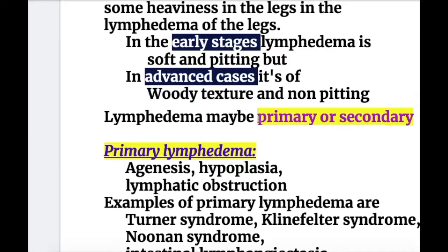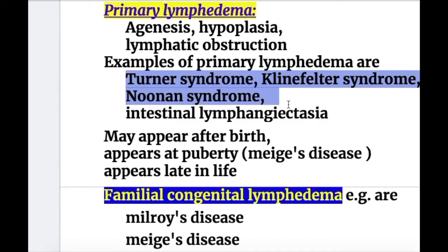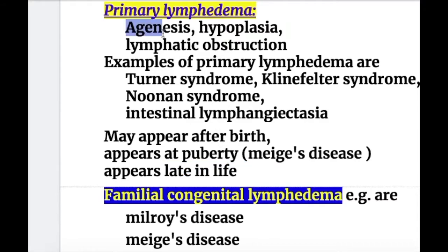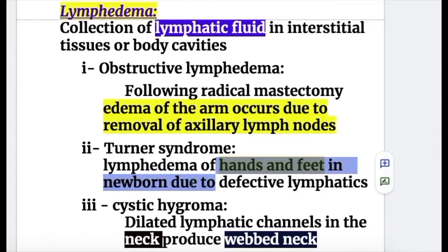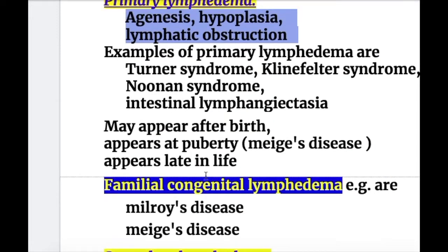Lymphedema may be primary or secondary. Primary lymphedema occurs if there is a developmental defect with agenesis, hypoplasia, or lymphatic obstruction. Examples include Turner syndrome, Klinefelter syndrome, Noonan syndrome, and intestinal lymphangiectasia. Primary lymphedema may appear after birth, at puberty (known as Meige's disease), or late in life. Lymphedema of the hands and feet in newborns with Turner syndrome occurs due to defective lymphatics. In cystic hygroma, dilated lymphatic channels in the neck produce a webbed neck. Familial congenital lymphedema examples include Milroy's disease and Meige's disease.